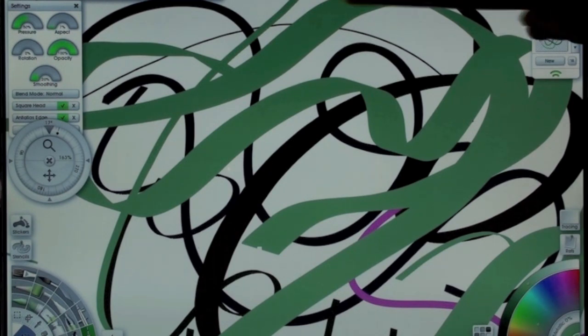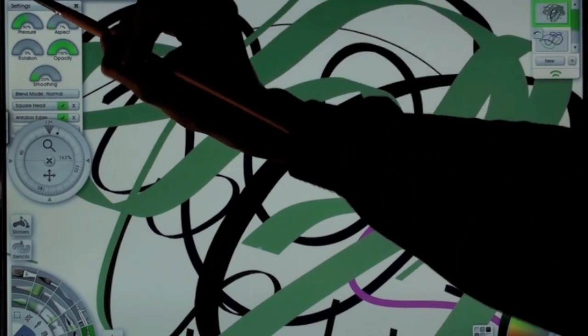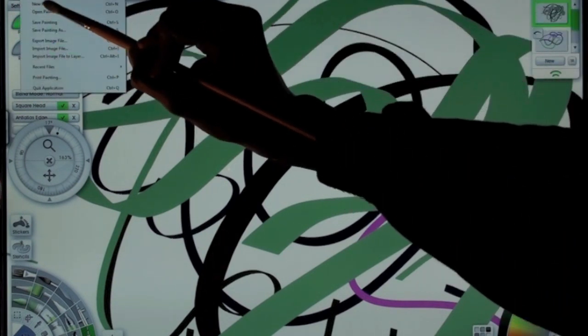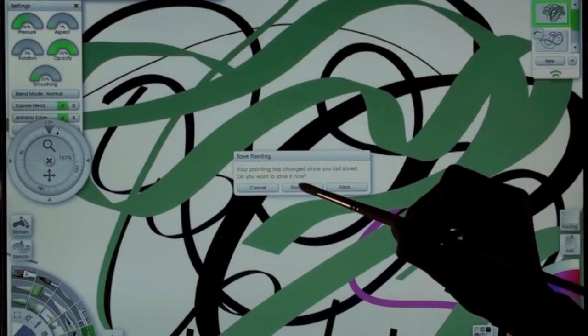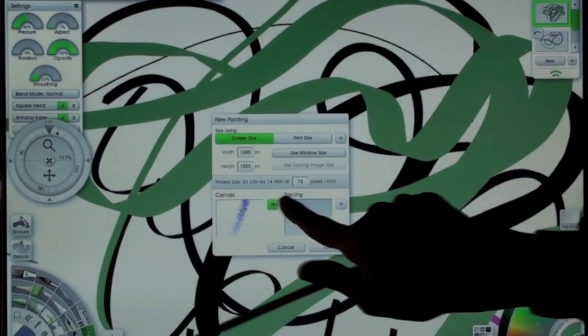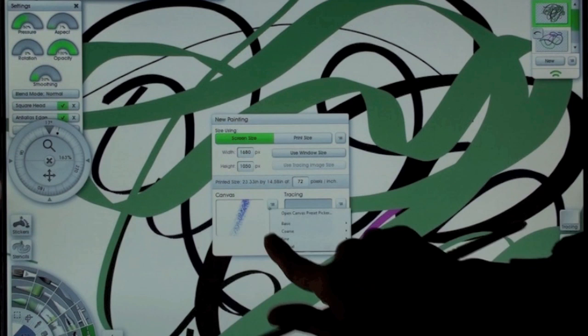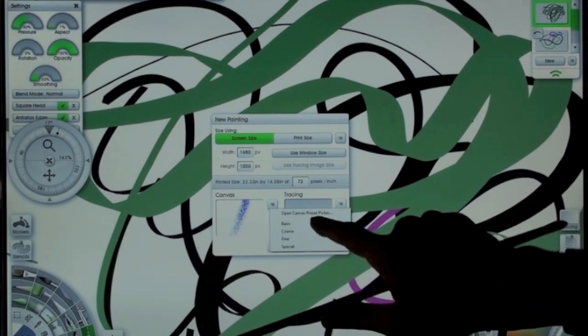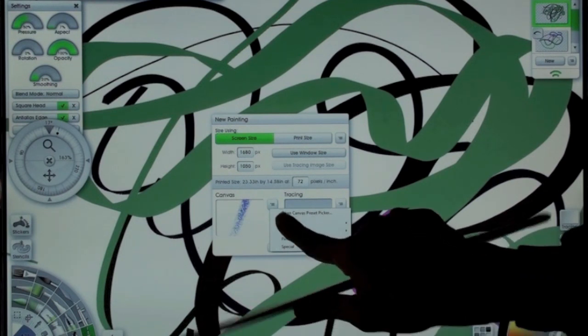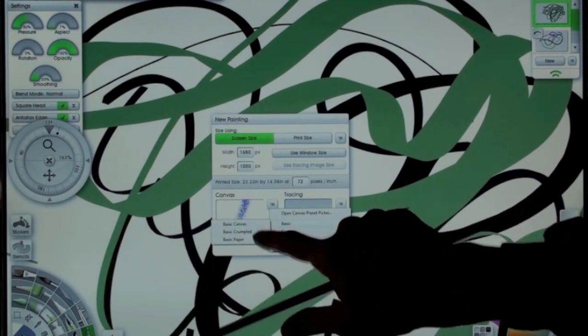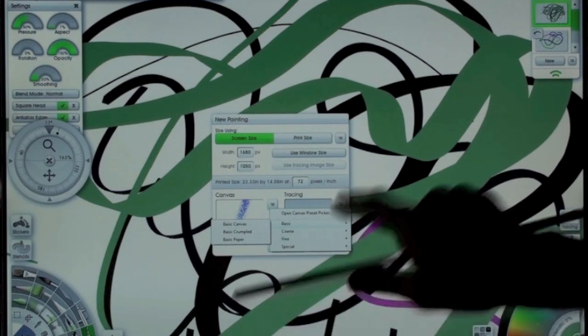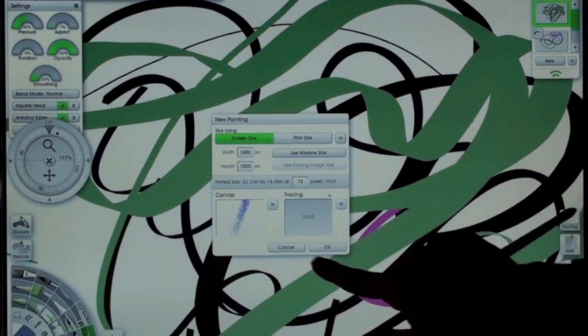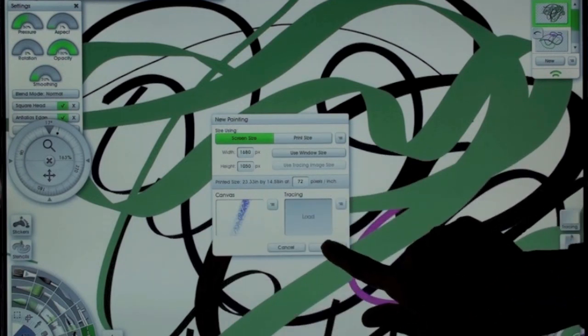Another feature: when you open a new painting, you can choose the texture in this sub-menu. You can choose basic, coarse, fine, or special, and each has a sub-menu with more options like basic canvas, basic crumbled, or basic paper. You have many options to customize it the way you like to work.